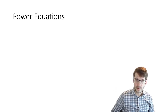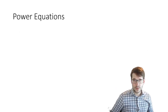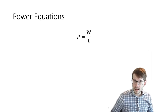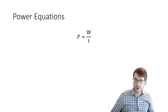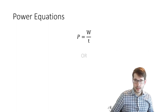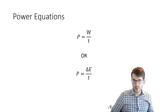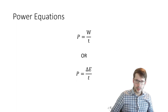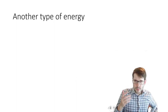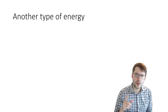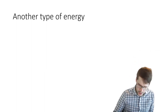For power equations, we've got two. Power equals work over time, or alternatively power equals the change in energy over time — because that's the other definition for work. So we just have two equations for this, but they're basically the same thing. The last type of energy we're going to talk about is one more to add to our chart.